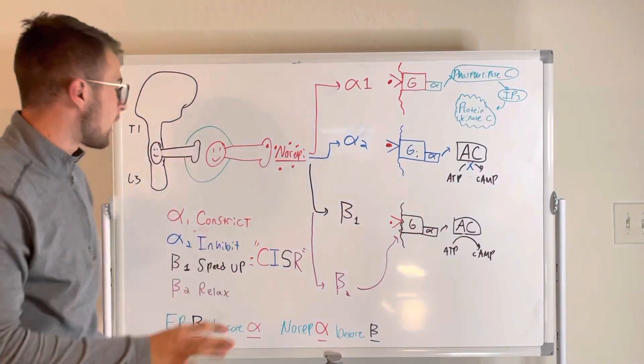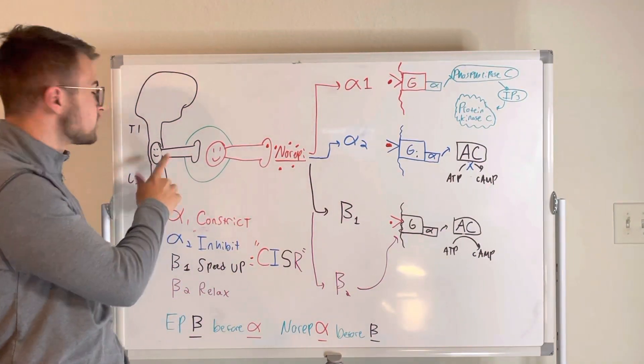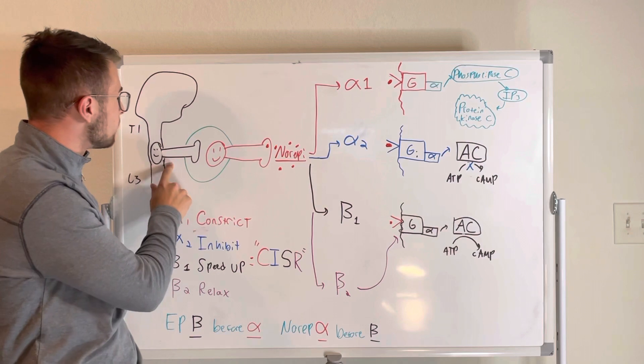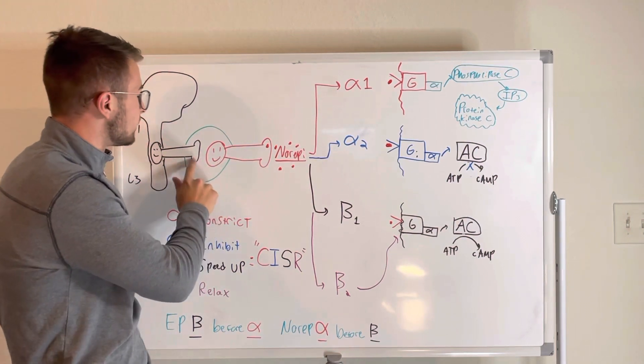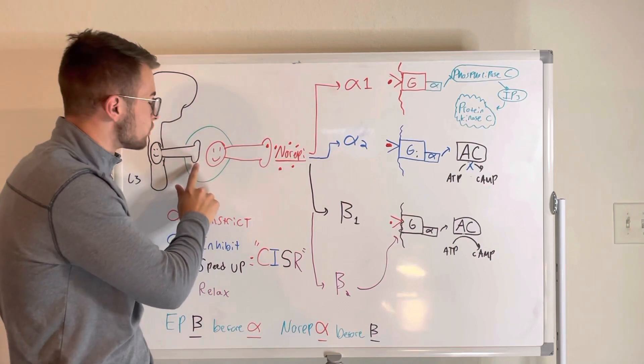Just a quick recap. We know that the sympathetic preganglionic neurons from the level of T1 to L3 will communicate with our postganglionic sympathetic neurons via acetylcholine and nicotinic 2 receptors.